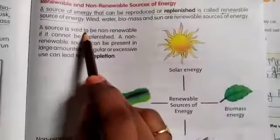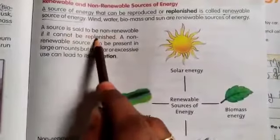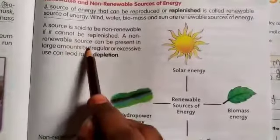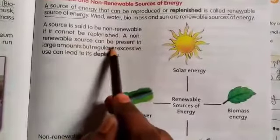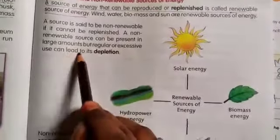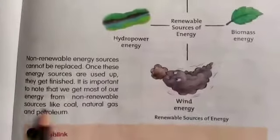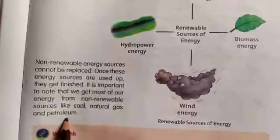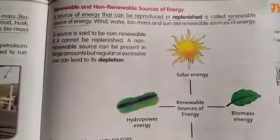A source is said to be non-renewable if it cannot be replenished. A non-renewable source can be present in large amounts, but regular or excessive use can lead to its depletion. Examples of non-renewable sources of energy are coal, natural gas and petroleum.